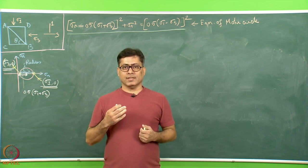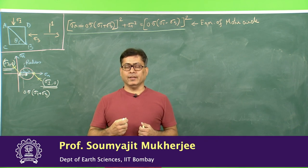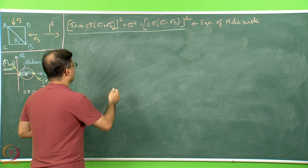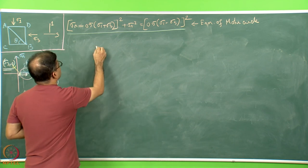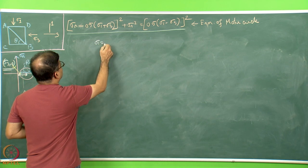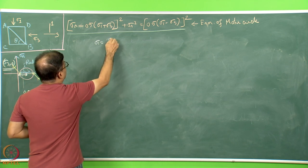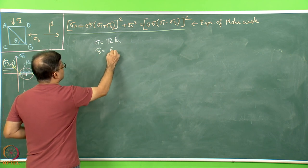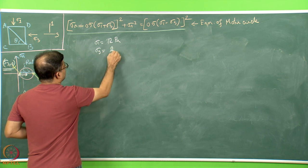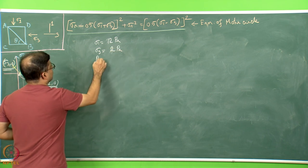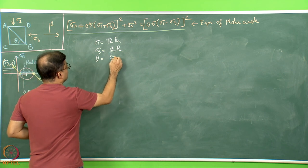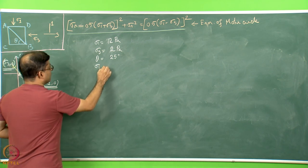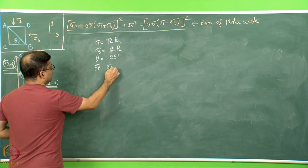Let us have a look at how the Mohr circle can be used graphically to solve problems. There is one way of using a calculator, and we will see how it can be done. The other way will be use of graphical means. The problem: imagine there is a given sigma 1 of 12 Pascal, a given sigma 3 of 2 Pascal, and theta is equal to 25 degrees. The question is how much is sigma N and how much is sigma S.